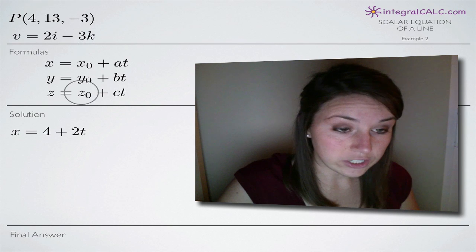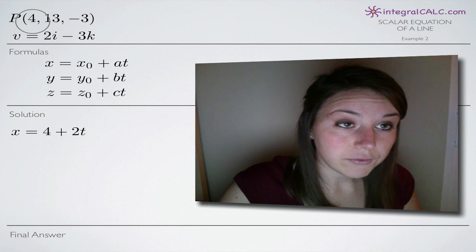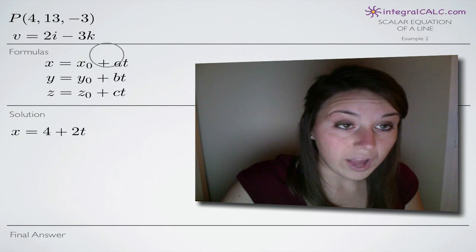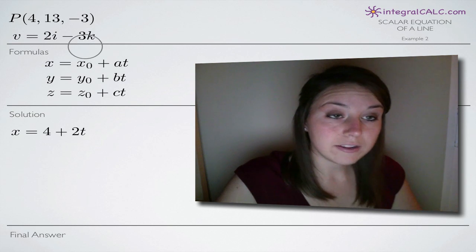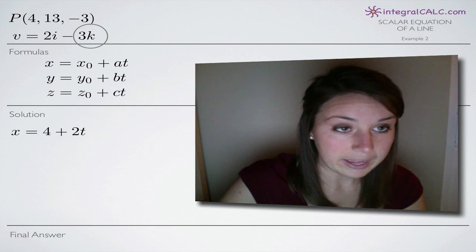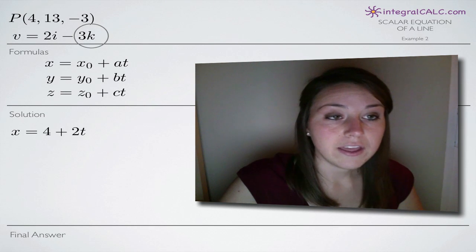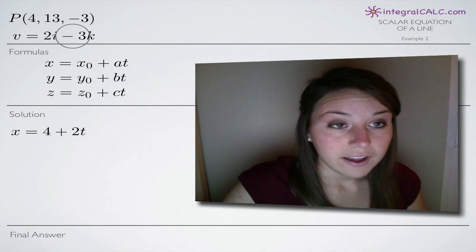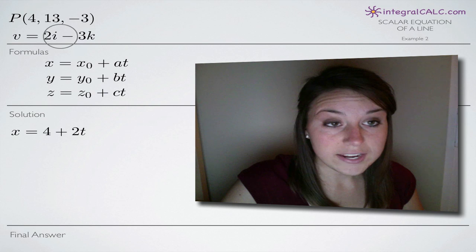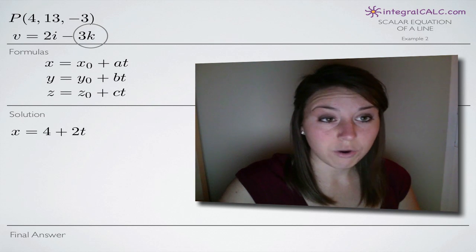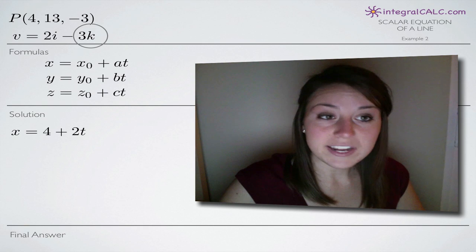For our first equation x, we plug in 4 for x sub zero. For a, we're going to plug in 2 because we have this vector 2i minus 3k. A vector is always in terms of i, j and k. In this case, j does not appear in the equation because we have zero j but remember that it's there.